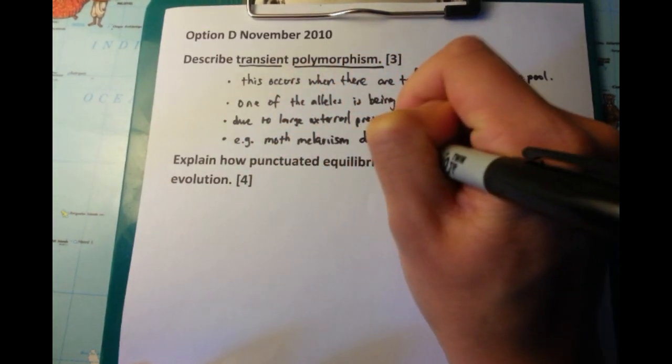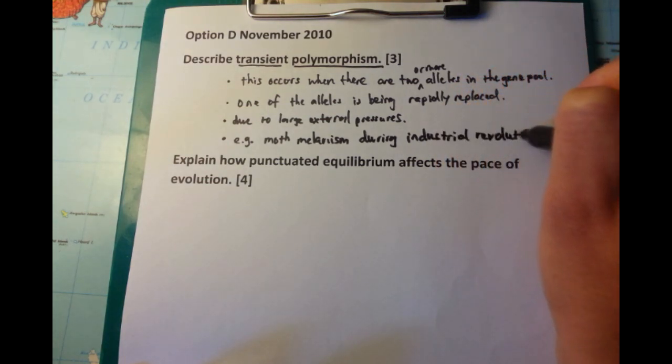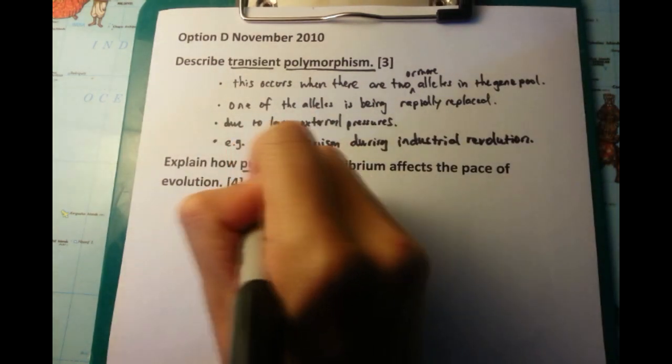And then due to the large external pressures, which in this case was additional pollution found in the Industrial Revolution environment. So, remember those three points and give an example. The easiest example I've found is moth melanism. Melanism is the blackness of the moth.